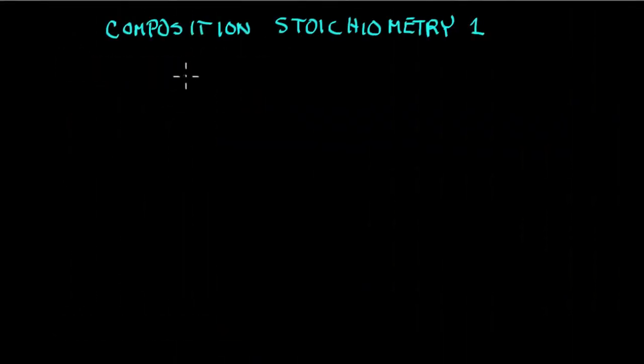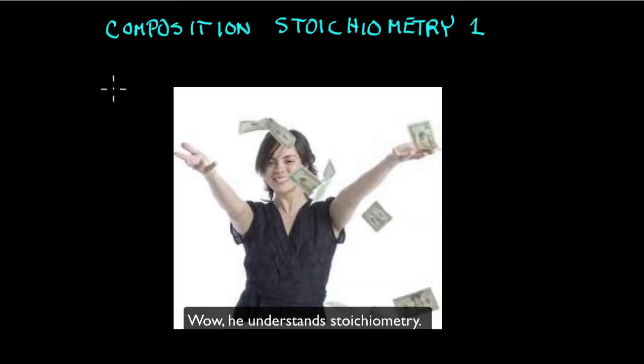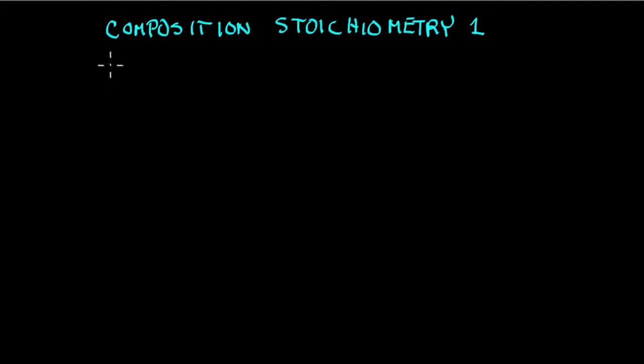This session is on composition stoichiometry, the first session. Now, stoichiometry - when you go to a party and say you understand stoichiometry, people could very well throw money at your feet, they would be so impressed. Or maybe not. But really, composition stoichiometry and stoichiometry in general is a pretty basic idea. It's a relationship of the quantitative aspect of reactants and products in reactions, and even simpler, the composition of starting points - the compounds themselves or even elements - is what we're going to start with first.